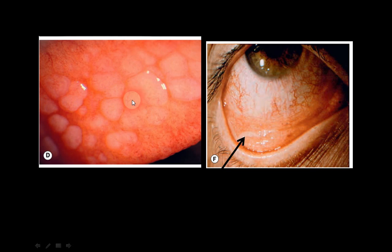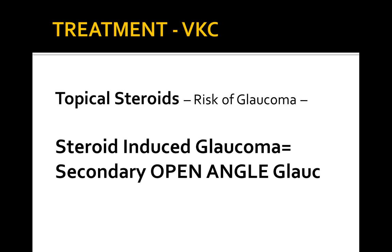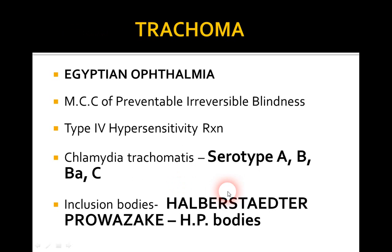Now let us observe the pictures. In the palpebral conjunctiva, you can see cobblestone papillae going for large giant cauliflower-like growth. You can see ropy discharge — Maxwell-Lyon sign. At the limbus, observe white raised lesions called Horner-Trantas spots. Over the cornea, this is the shield ulcer, also called Togbe's ulcer. Corneal plaques are also visible. The main stay of treatment is topical steroids, but an important MCQ point is that topical steroids may increase the risk of steroid-induced glaucoma — which is a secondary open-angle glaucoma, not closed-angle.